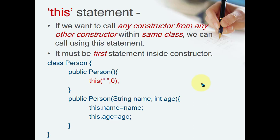Hello guys, welcome back to Techistube. Now let us see what the `this` statement is in Java. This statement is used to call the constructor explicitly, and the rule to call the constructor is like this.